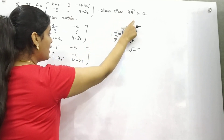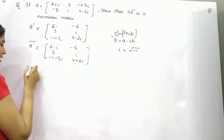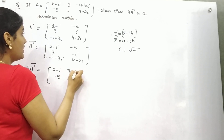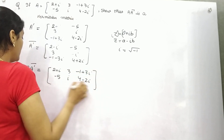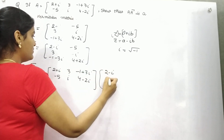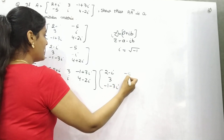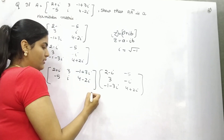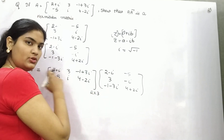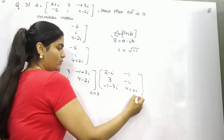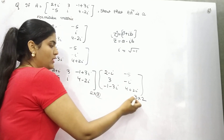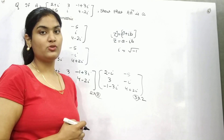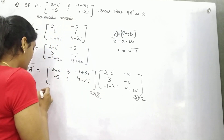Now you have to prove this as Hermitian. So firstly find out the product: matrix A, which is [2 plus iota, minus 5, 3 iota; minus 1 plus 3 iota, 4 minus 2 iota], multiplied with its conjugate transpose [2 minus iota, 3; minus 1 minus 3 iota, minus 5 minus iota; 4 plus 2 iota]. This is a 2 by 3 order matrix with 2 rows and 3 columns, and this is a 3 by 2 matrix. So you nullify the inner dimensions and it results in a 2 by 2 matrix. Remember, a Hermitian matrix is always a square matrix, and 2 by 2 is a square matrix.